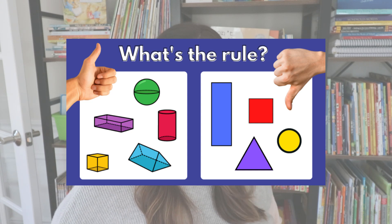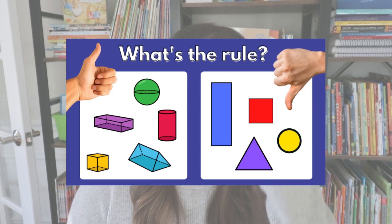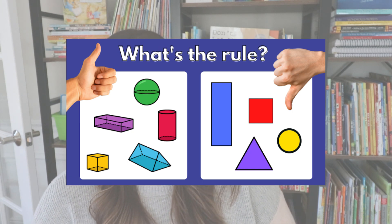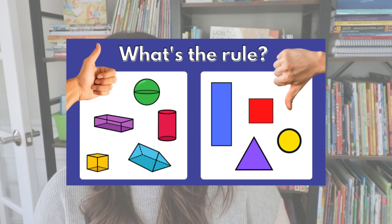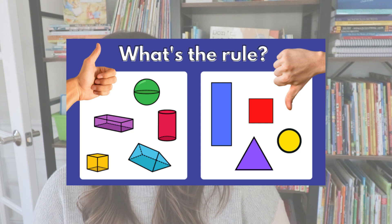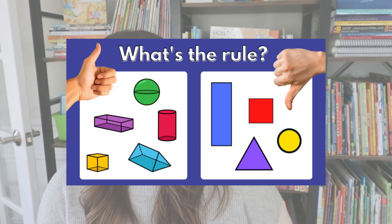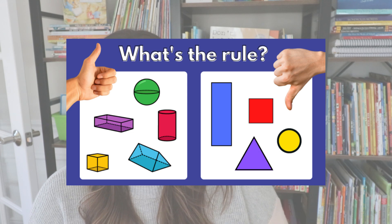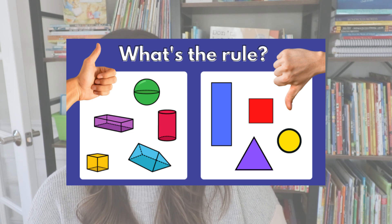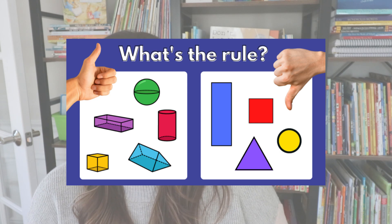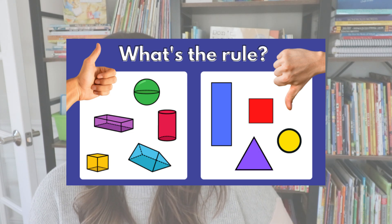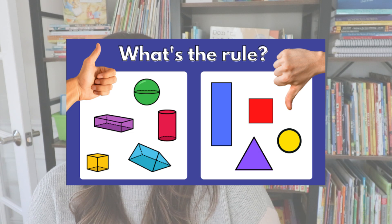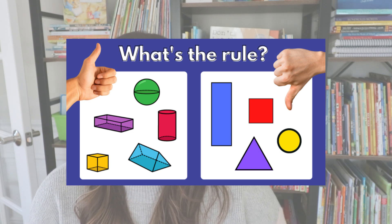Here you can see we have a thumbs up side and a thumbs down side, and also the question 'what's the rule?' That is commonly how I present these to my kindergarten, first, and second grade classrooms. Students have to look at everything on the yes side and determine what the rule is. Once they figure it out, they have to prove that everything on the thumbs down side does not have those attributes. As adults, we can quickly see that everything on the thumbs up side is a 3D shape, and everything on the thumbs down side is a 2D shape.